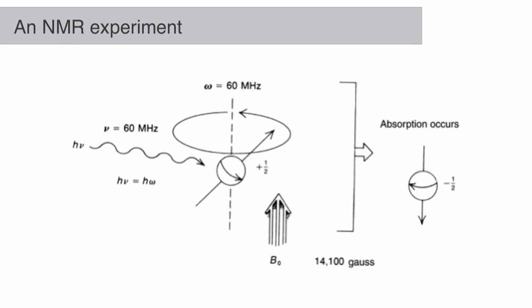Radiofrequency waves are now supplied to this sample containing these precessing protons. This is the NMR experiment. If a radiofrequency wave coming in matches the resonance frequency of the precessing nucleus, the nucleus will absorb that energy and flip its spin.